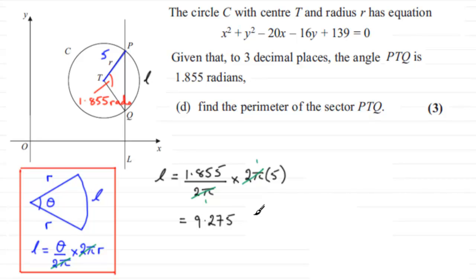So when it comes to finally working out the perimeter, we can say that therefore the perimeter PTQ equals 9.275, and then we've got plus the 5 here and the other radius 5, so it's plus a total of 10, and you obviously get 19.275.